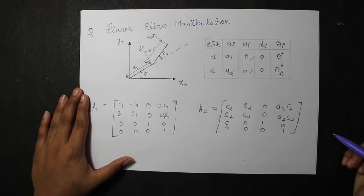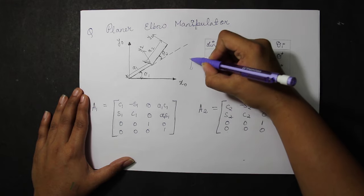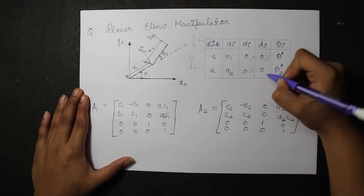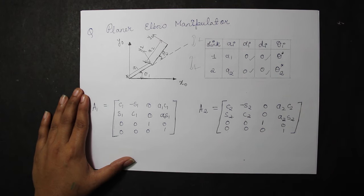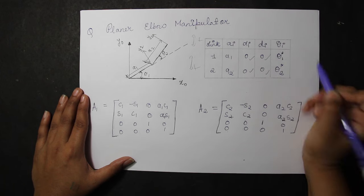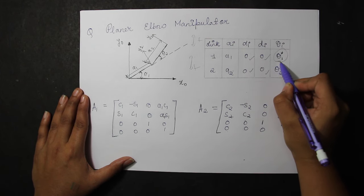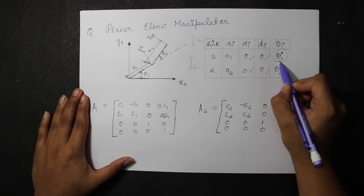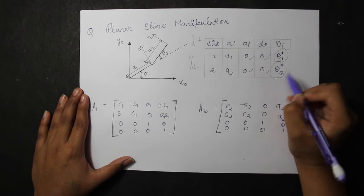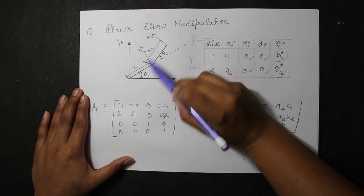Similarly, we do not even have a translation of both the links and we have D1 and D2 as 0. What we have here is the joint angle, that is, the angle between the links, that is, theta 1 between A1 and the x-axis and theta 2 between the original A1 and A2 link.